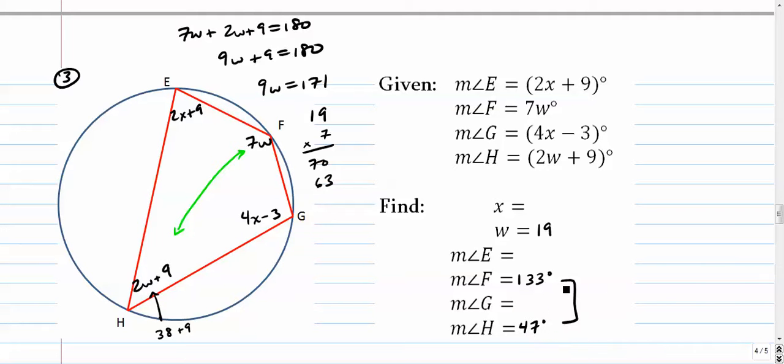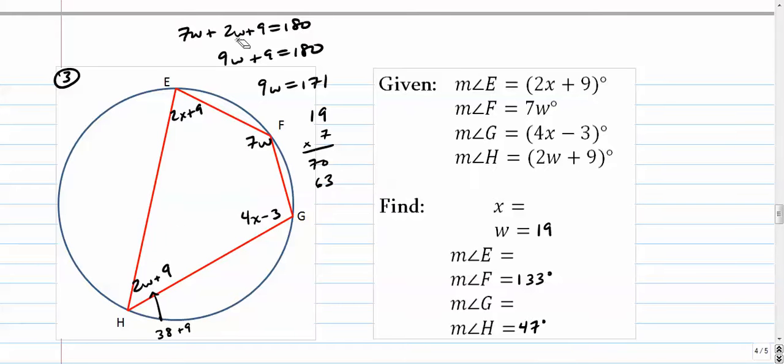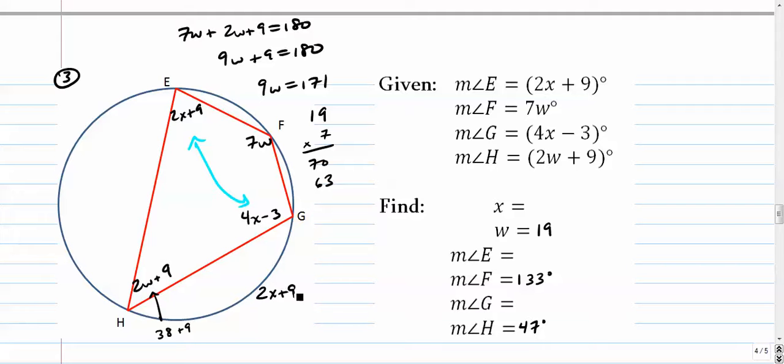All right, let's go back and find the value of x. So let me get rid of this green thing. I'll go inside and I'll say, all right, these two now are supplements. So I have 2x plus 9 plus 4x minus 3 equals 180.